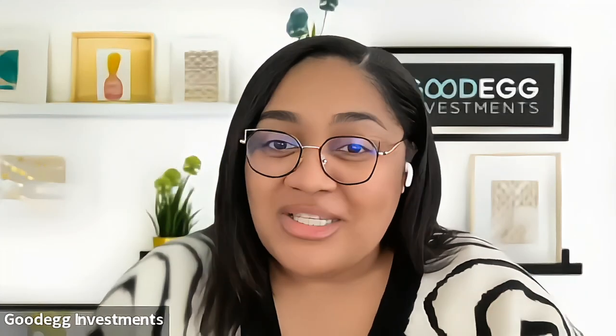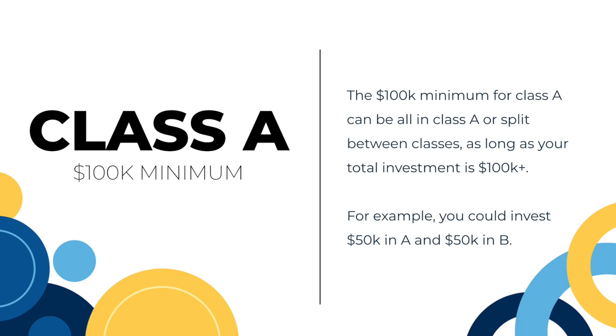Looking at the projected investor returns, we went over the three different classes that are available, why someone would invest in one over the other, and what kind of profile you're looking for. The minimum investment for Class A is $100,000. One thing we do at GoodEgg and love to offer is flexibility in your investments — we typically allow folks to come into Class A with $50,000 if they're also investing $50,000 in another class, meaning you have $100,000 invested across the offering.